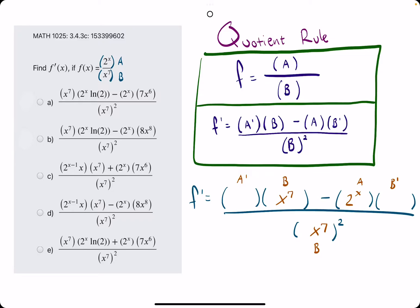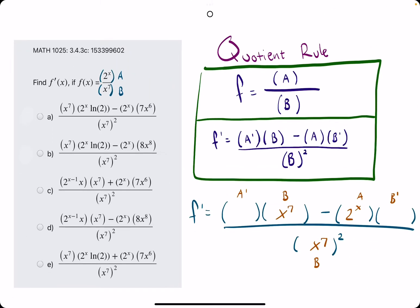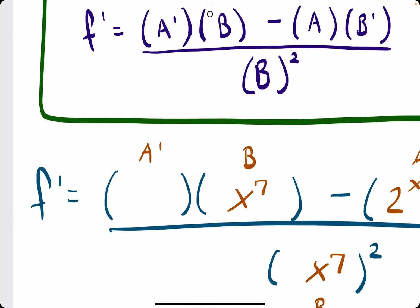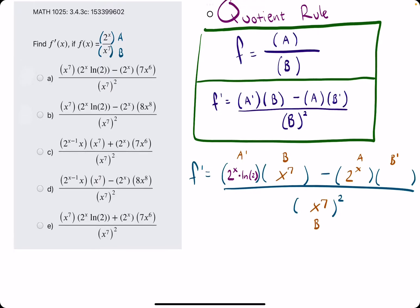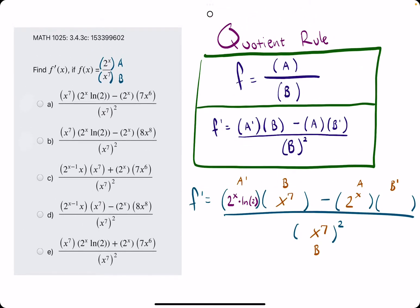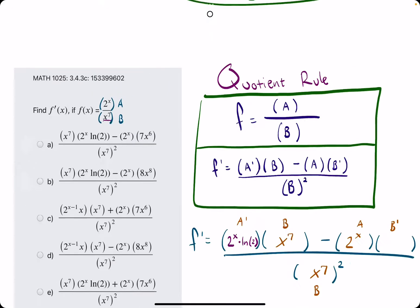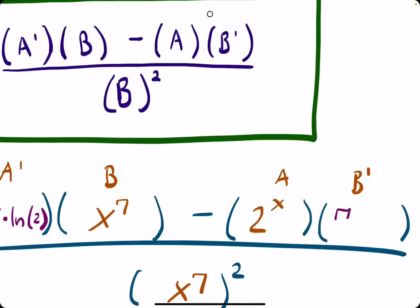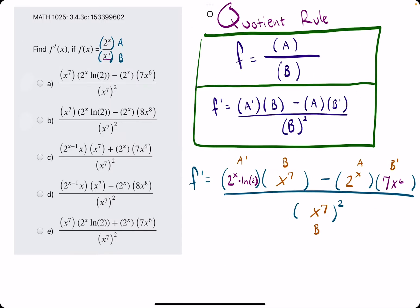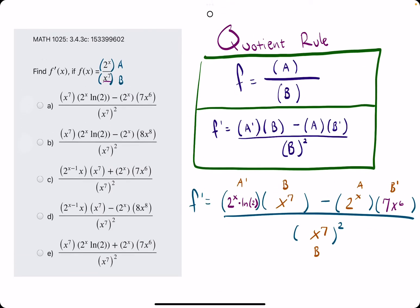A prime, the derivative of 2 to the x is 2 to the x times natural log of 2. That follows the exponential rules for the derivative rules for exponential functions. And then B prime is the derivative of x to the 7th, which is 7x to the 6th. So we are done. This is the whole thing using the quotient rule.